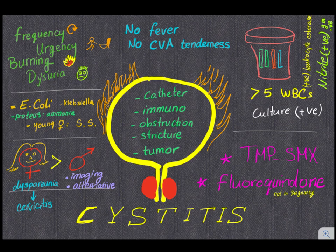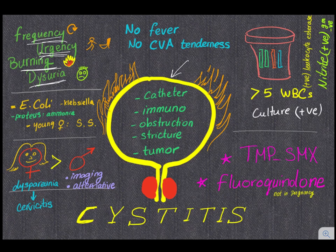Cystitis quick review. Here is the urinary bladder on fire. The symptoms are frequency, urgency, burning, and dysuria. There is no fever and no costal vertebral angle tenderness. If you have these four symptoms plus fever and costal vertebral angle tenderness, it's probably pyelonephritis.